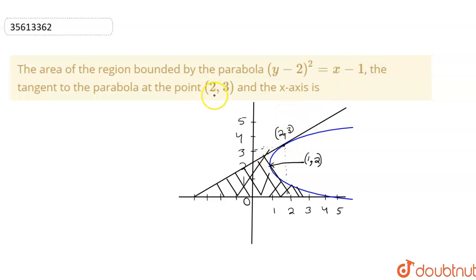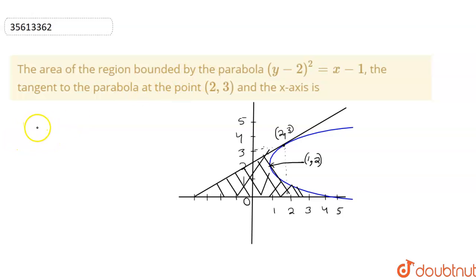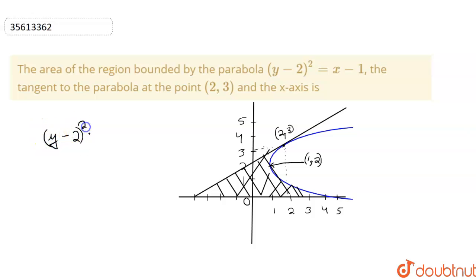We will draw a tangent at the point (2, 3). First of all, we have drawn a rough tangent. The slope will be found from the tangent. So what do we need to do? We will differentiate this equation. Our equation is (y−2)² = x−1.